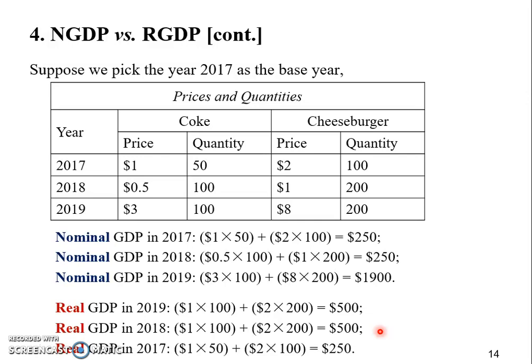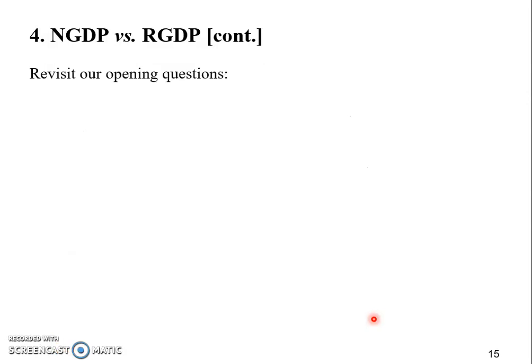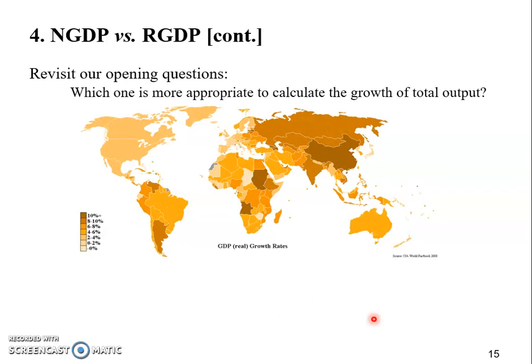By using base year prices we squeeze out inflation — or deflation — or any change in price levels. Now we don't have to worry about that; the difference in our GDP numbers simply tells us the change in quantities, which is exactly what we want. Let's revisit the opening questions: when we compare output growth across countries, we use the real GDP growth rate.